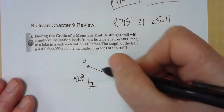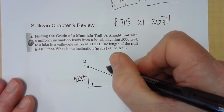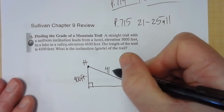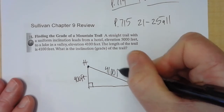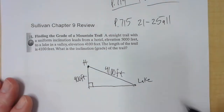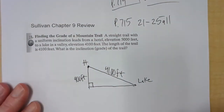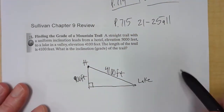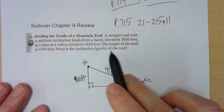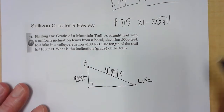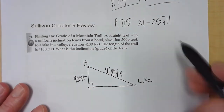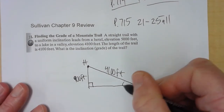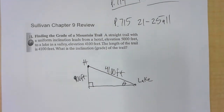The trail is 4,100 feet long, and there's a 900-foot drop. All they want to know is the grade of the trail — the angle of inclination. So we want this angle right here, theta. Go ahead and find theta.